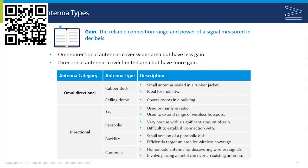Omnidirectional ceiling domes are probably the most common type, used to cover rooms in a building with a wireless signal. You also have the rubber duck, which is a small antenna sealed in a rubber jacket — ideal for mobility. They're not very strong and are often used in walkie-talkies, two-way radios, and other short-range wireless technology, and can be seen installed in wireless network cards that plug into portable computers.